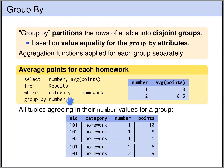The GROUP BY clause in SQL partitions the table into disjoint groups based on value equality for the GROUP BY attributes. In this example the GROUP BY attribute is only one attribute, NUMBER. So the table is partitioned into groups based on the equality of the attribute NUMBER. Here we are looking at the RESULTS table and the HOMEWORK RESULTS. The HOMEWORK RESULTS will be partitioned into groups — two groups: one for NUMBER 1 and one for HOMEWORK NUMBER 2. Now the aggregation functions are applied for each group separately.